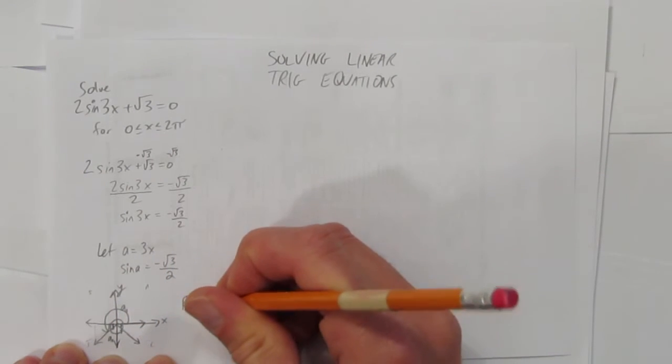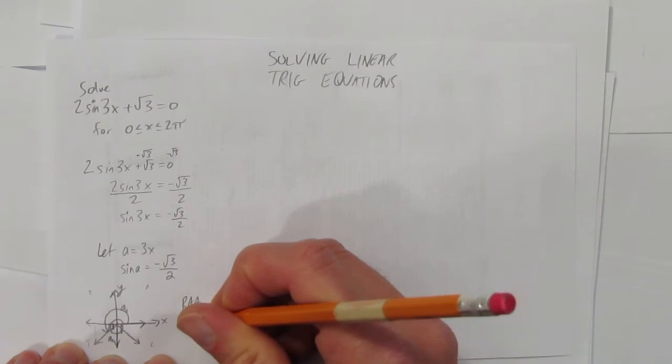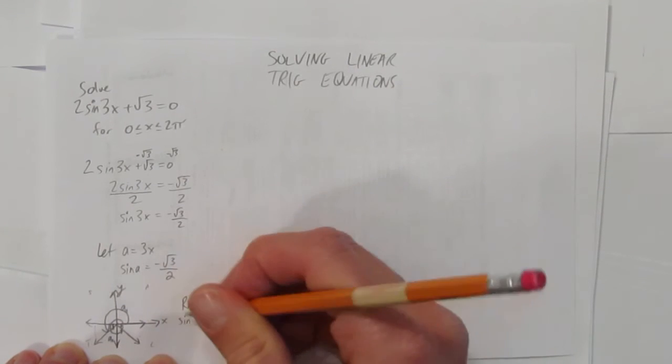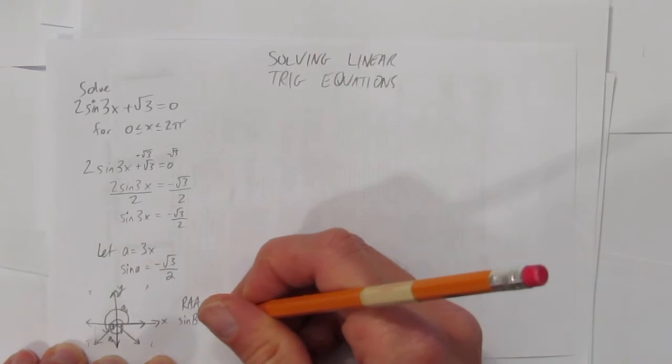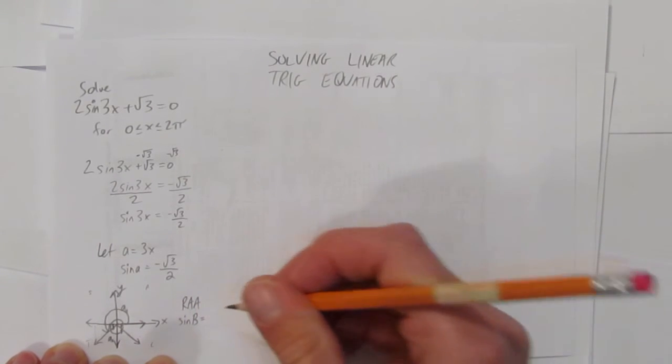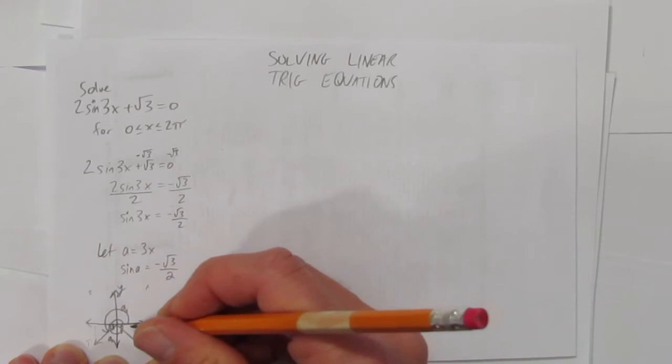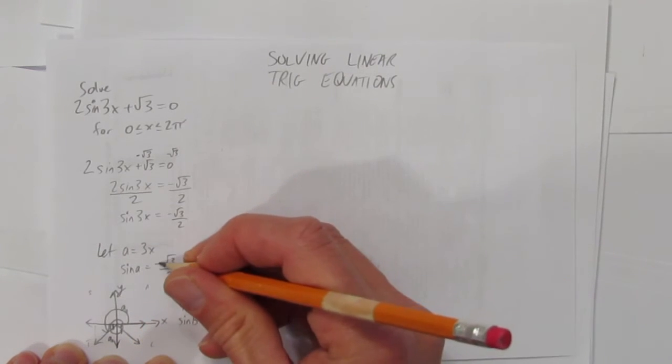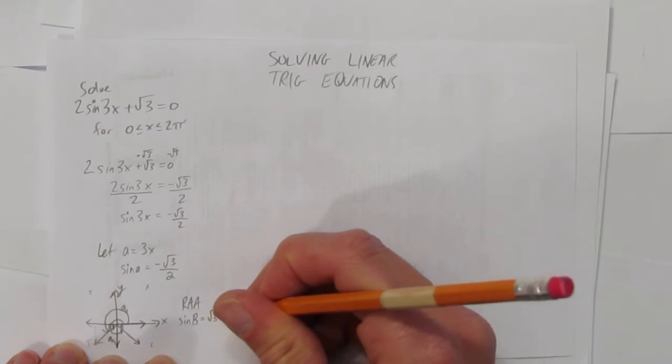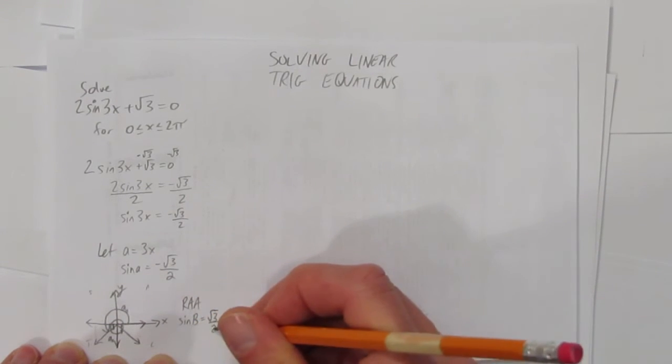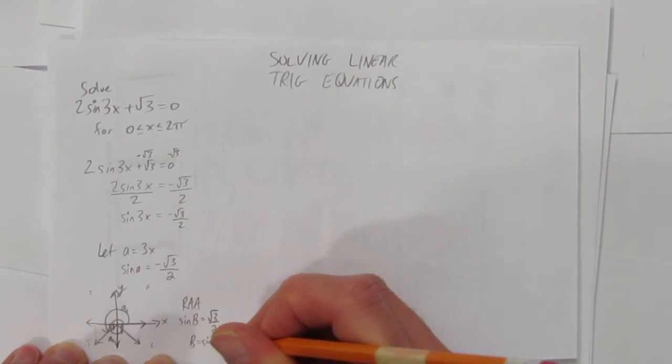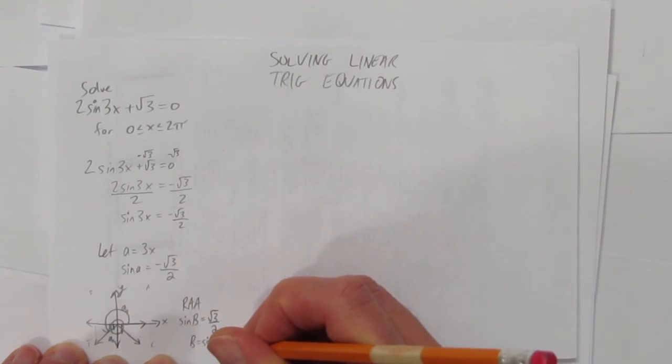I'll solve the related acute angle by finding sin(β). When I solve a related acute angle, because I'm working in a triangle, there's no negatives. I'm just solving with sides of √3 and 2. How do you solve sin(β)? You take the inverse sine. That's sin⁻¹ of your ratio or fraction here.